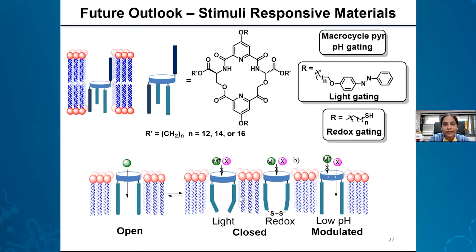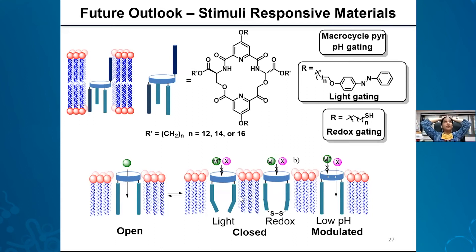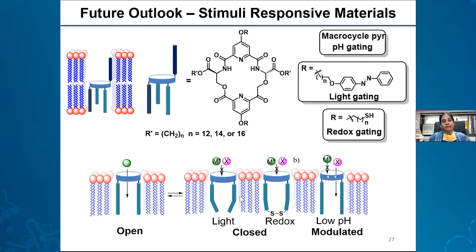Regarding the 6-5-6 heterocyclic scaffold — we actually tried a 5-6-5, so yeah we could also try a 6-5-6 as long as it's easily synthetically accessible.